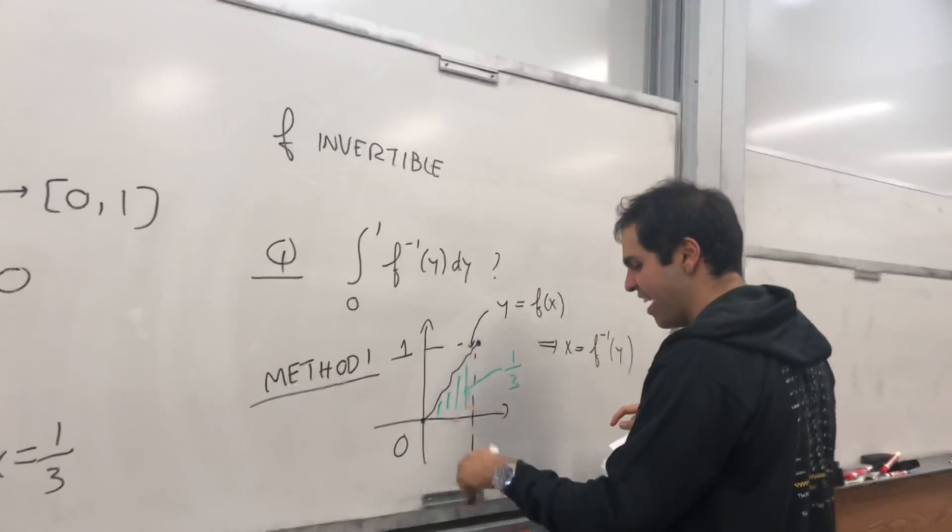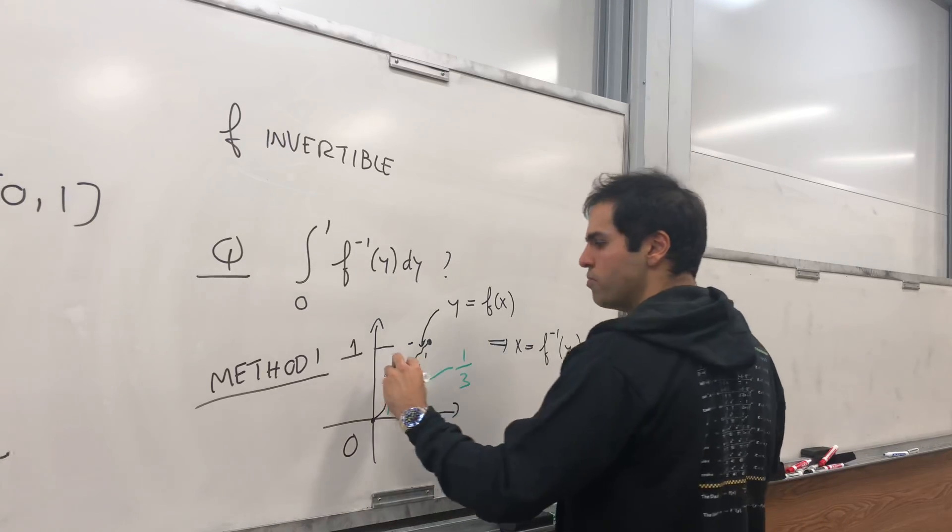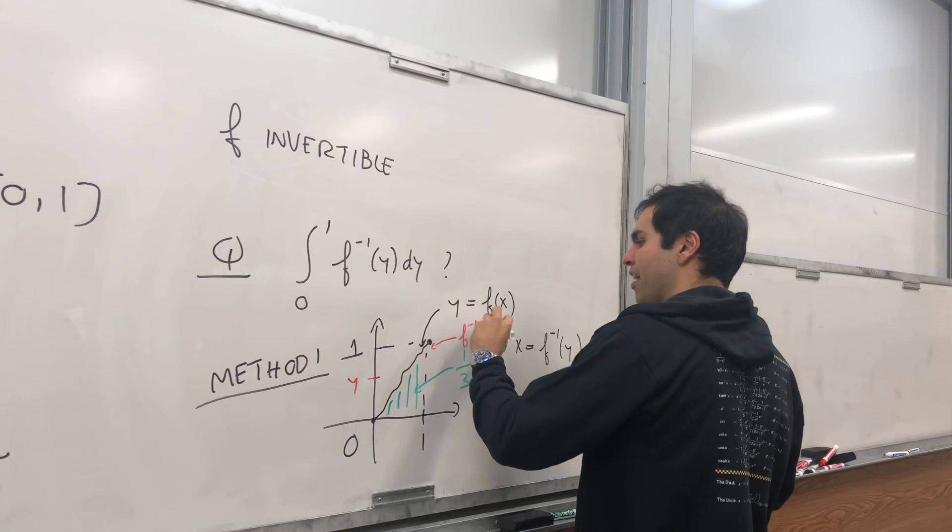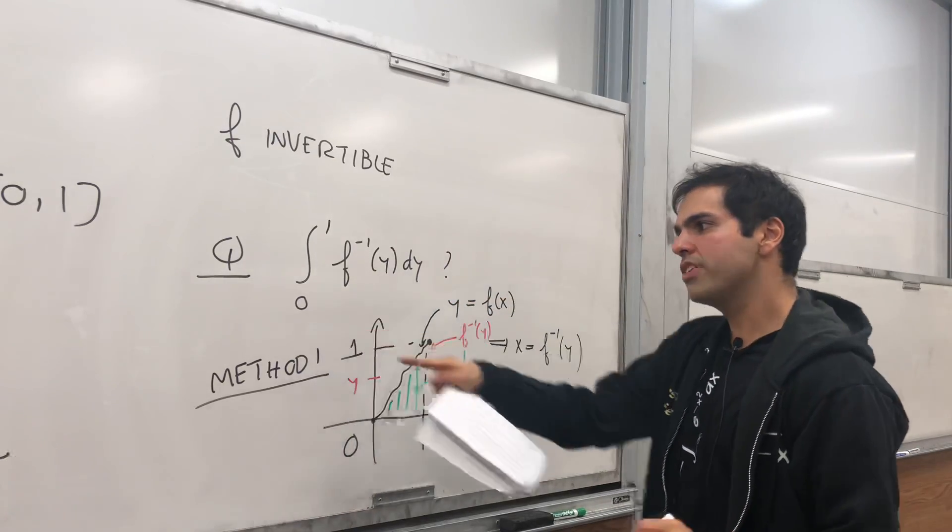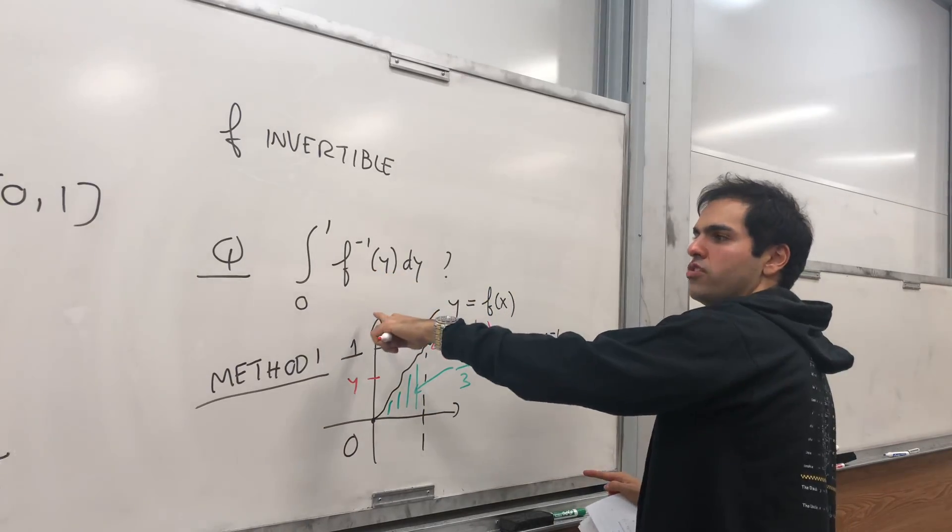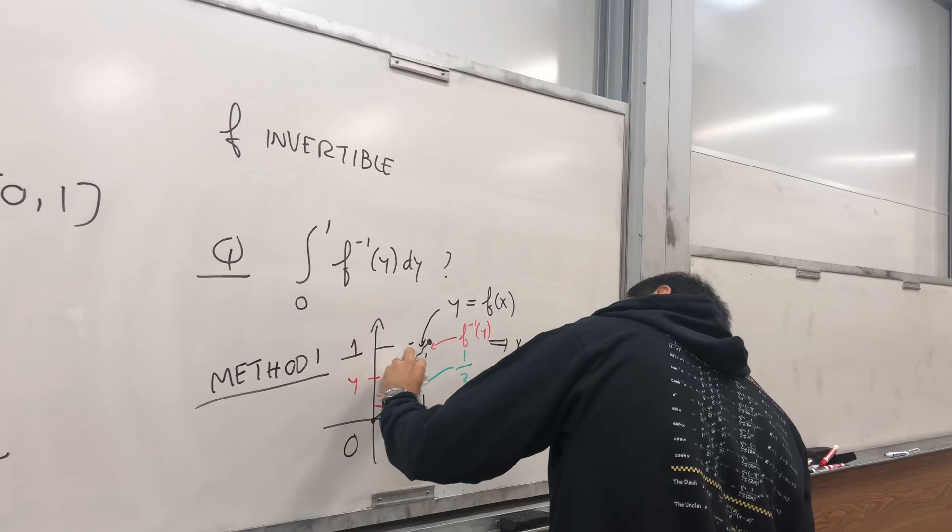And moreover, if you tilt your head, notice this is not the graph of f, but in terms of y, this is the graph of f inverse of y. And so the question then becomes, what is the area under the graph of f inverse of y from 0 to 1? Well, it's this area.